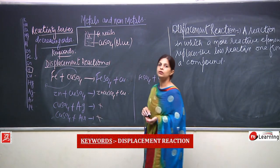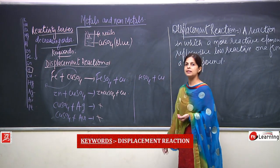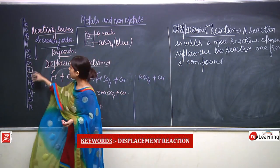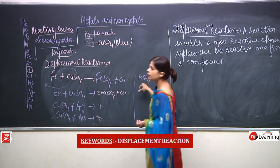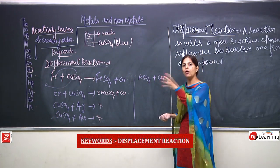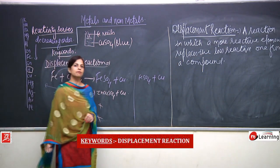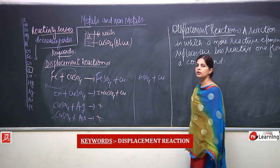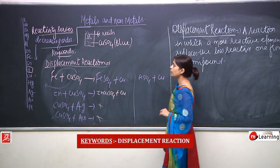For FeSO₄ + Cu: Fe is higher in the series and Cu is below, so copper cannot replace iron — this reaction will not take place. This is how we can use the reactivity series to understand and predict reactions. It is very very important to read and memorize the reactivity series.